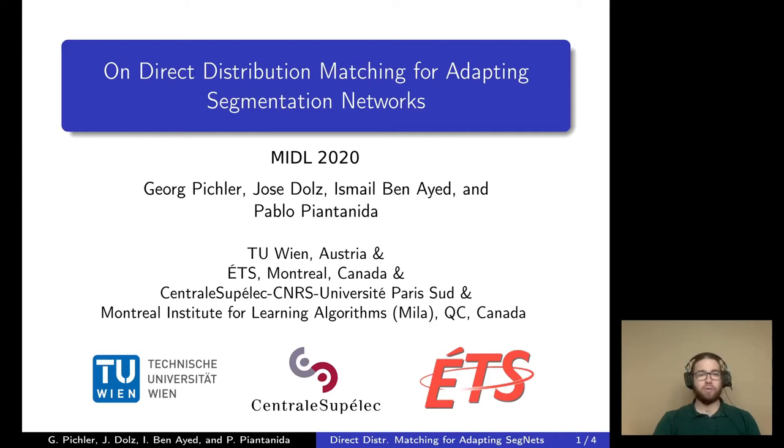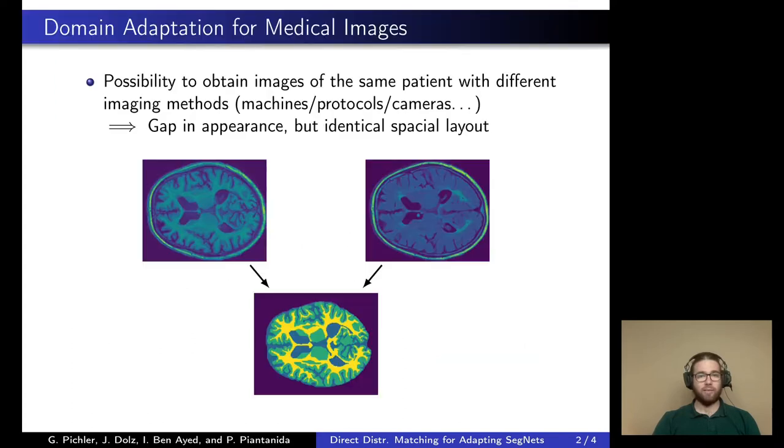We present a domain adaptation approach for semantic segmentation that takes advantage of the fact that in medical imaging, it's entirely possible to have source domain data and target domain data that correspond to exactly the same ground truth labels.